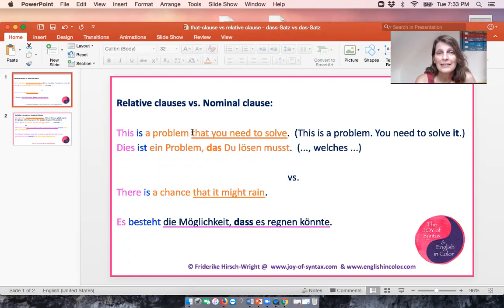And then if we use that as a relative clause, then we pull out the object and replace it by the relative pronoun, and that then has both the function of a clause constituent or clause element, namely the object, but it has to be placed in front of the clause because it attaches to the noun that it modifies, aka the problem. So this is a problem that you need to solve. A restrictive relative clause introduced by the relative pronoun that.